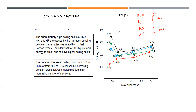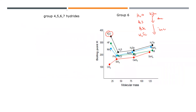Why does this trend occur? First, the boiling point of water H₂O is higher compared to any other compound in the same group. Then from H₂O to H₂S there is a decrease, and then from H₂S to selenium there is an increase. The reason: in the case of water, in its structure there is a hydrogen bond.